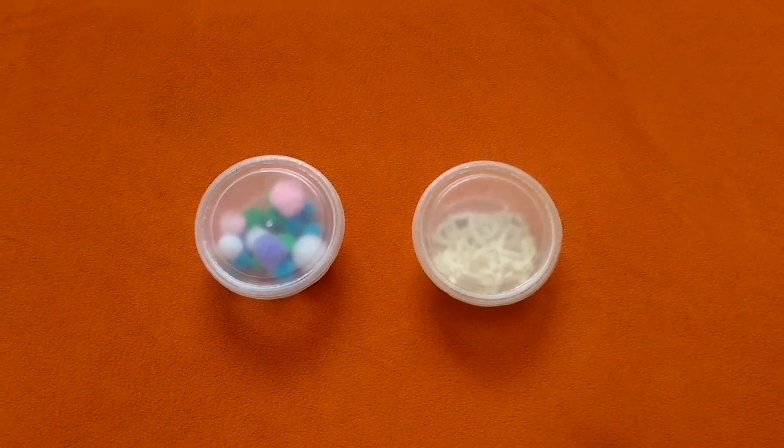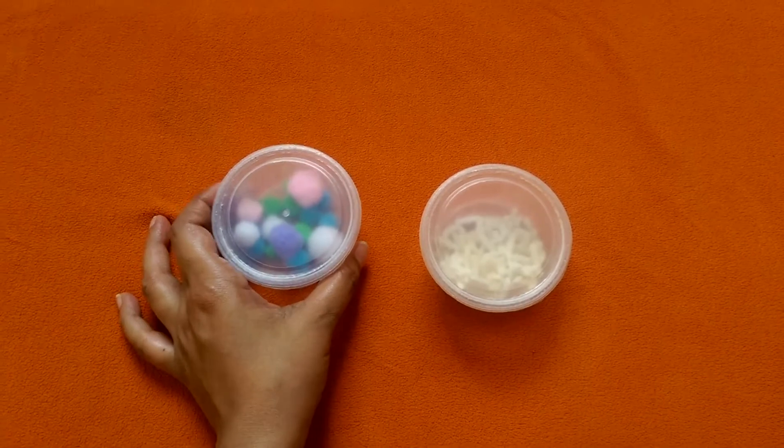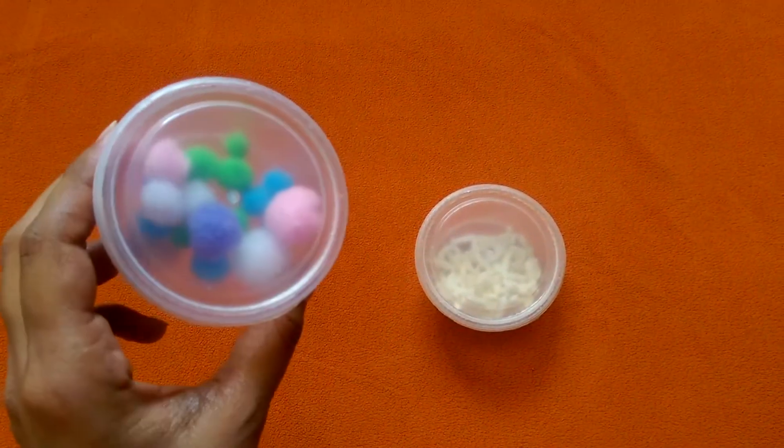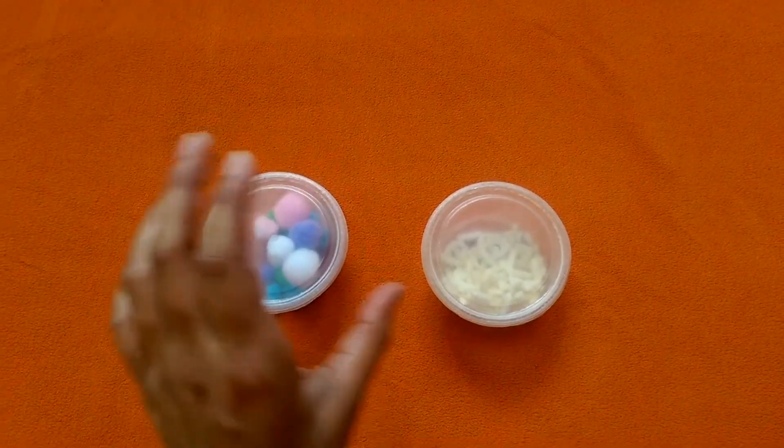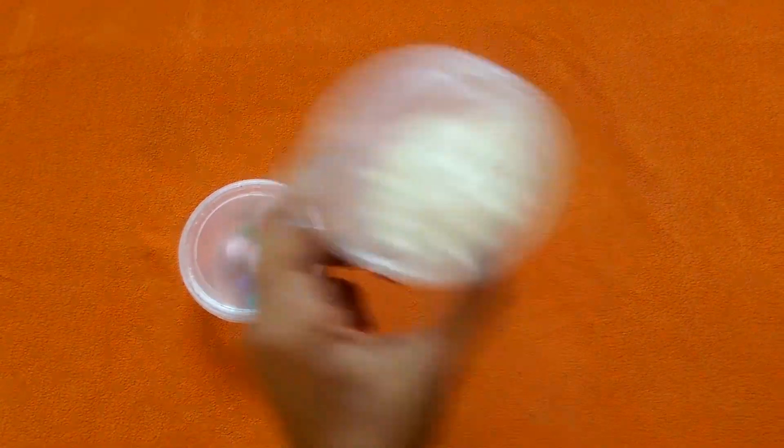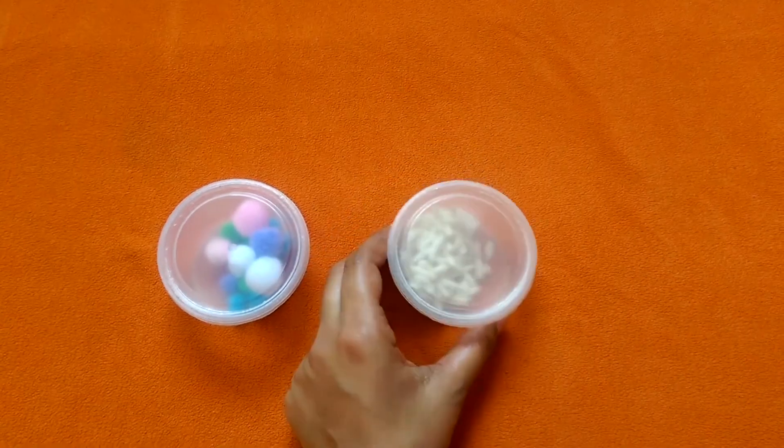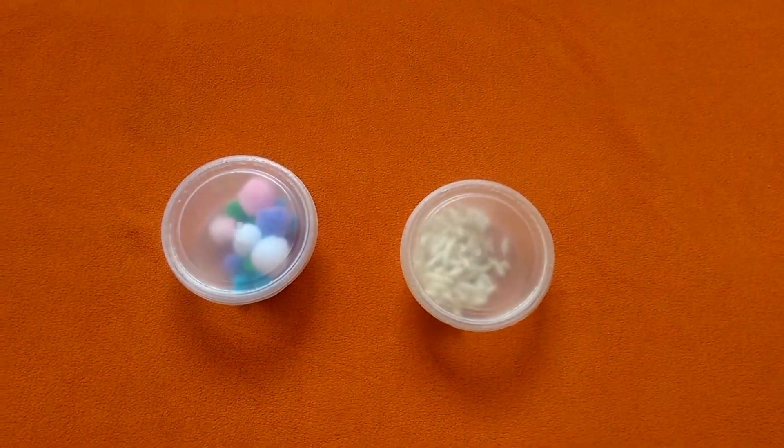So how we do this activity: what I do is I show him the first box, shake it, and say 'no sound.' Then I take the second box, shake it, and say 'sound' as it makes sound.